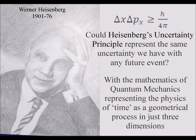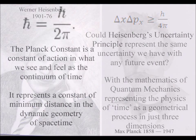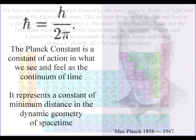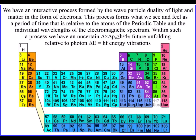The probabilistic nature of quantum mechanics represents the physics of time, with classical physics representing processes over a period of time relative to the atoms of the periodic table.